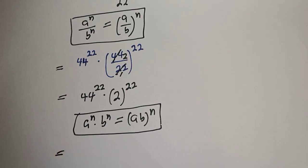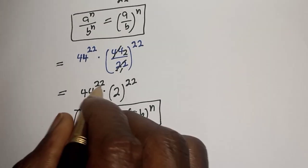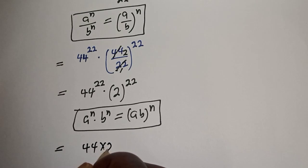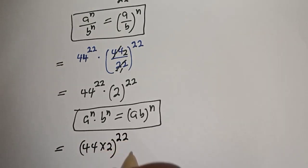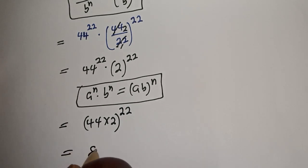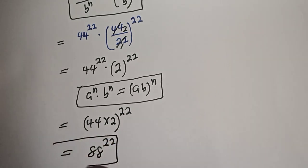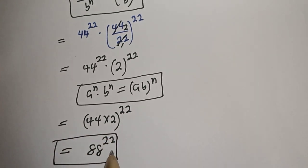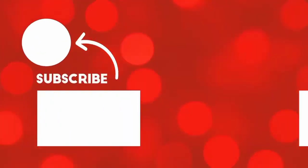This is equal to 44 multiplied by 2 raised to power 22. Since 44 times 2 equals 88, the final answer is 88 raised to power 22. If you enjoyed the class, please don't forget to like, share, comment and subscribe. Thank you.